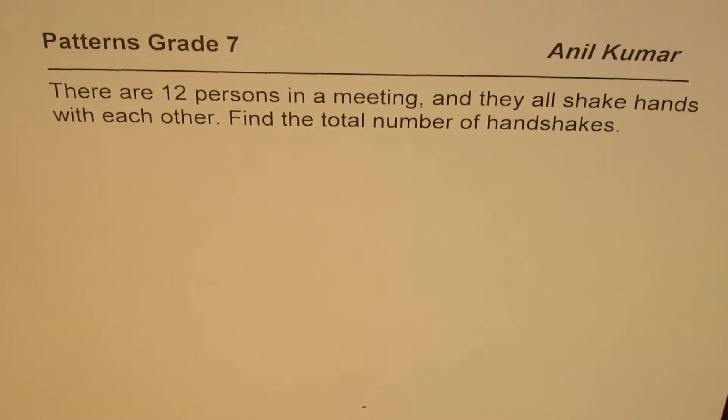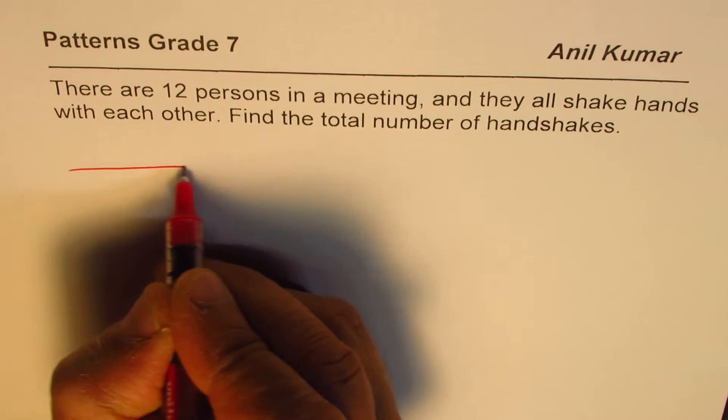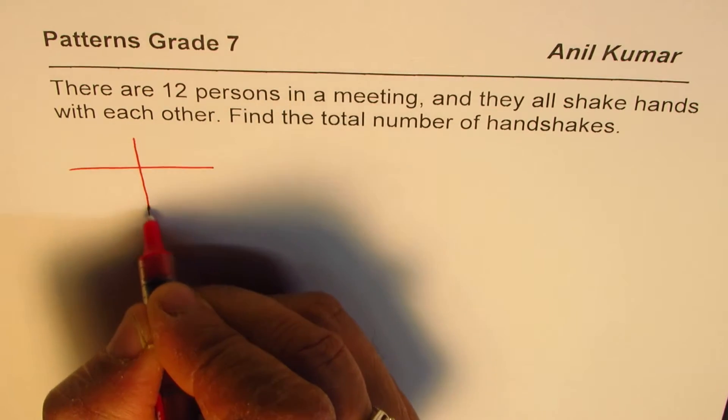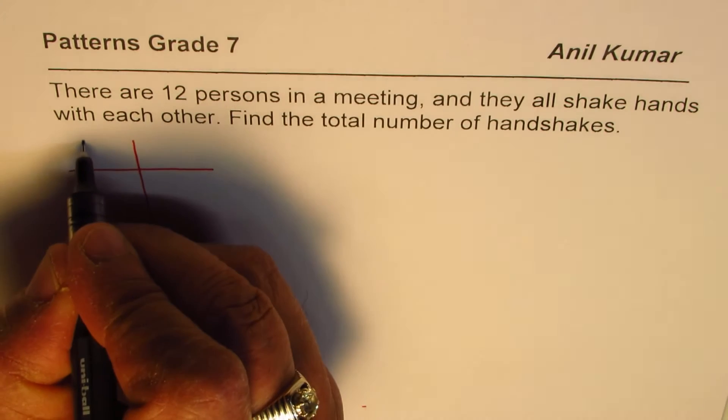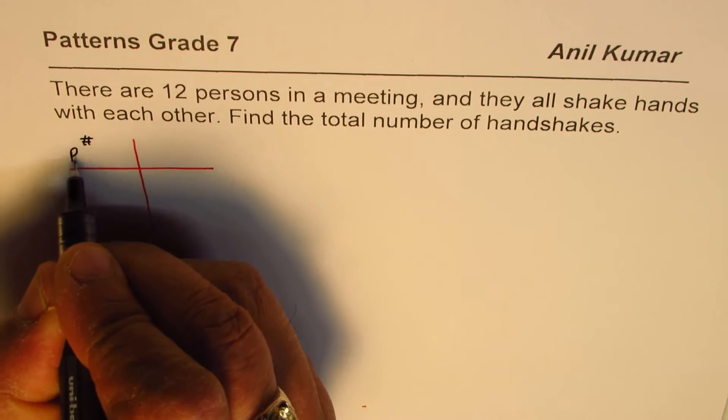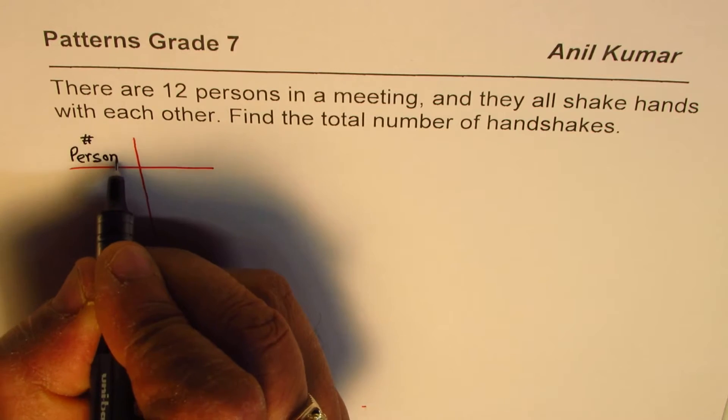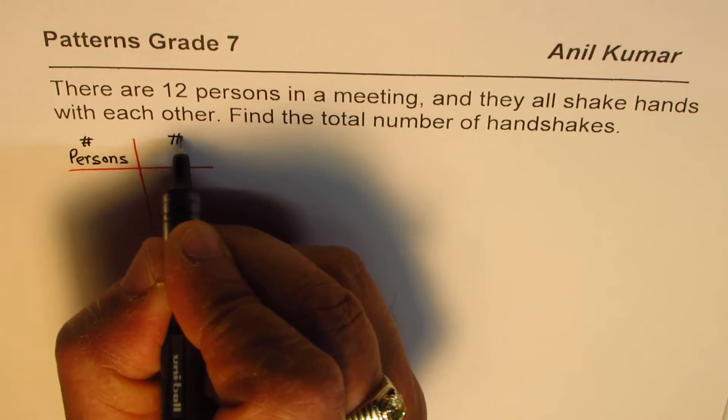Now we can make a table of values to help us find a pattern. Let us write down 'number of persons' here, and here we'll write 'number of handshakes'.